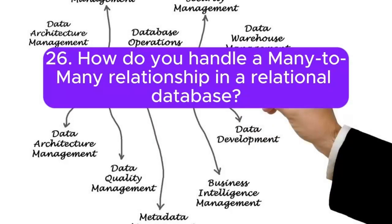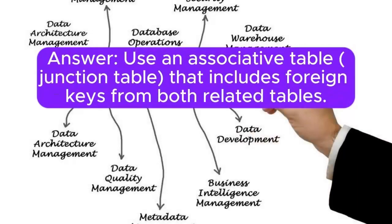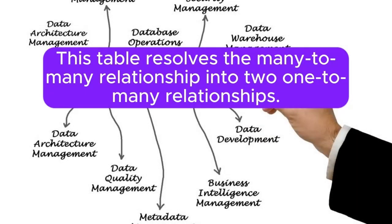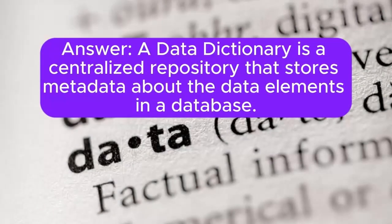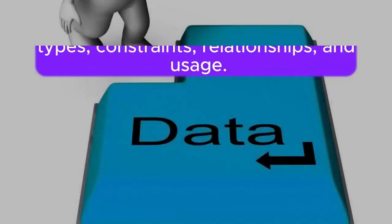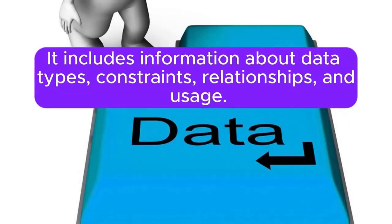26. How do you handle a many-to-many relationship in a relational database? Answer: Use an associative table (junction table) that includes foreign keys from both related tables. This table resolves the many-to-many relationship into two one-to-many relationships. 27. Explain the purpose of a data dictionary. Answer: A data dictionary is a centralized repository that stores metadata about the data elements in a database. It includes information about data types, constraints, relationships, and usage.